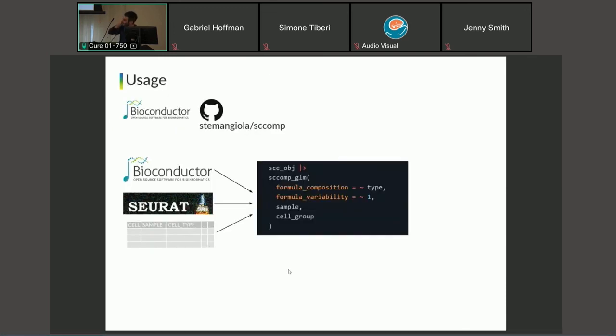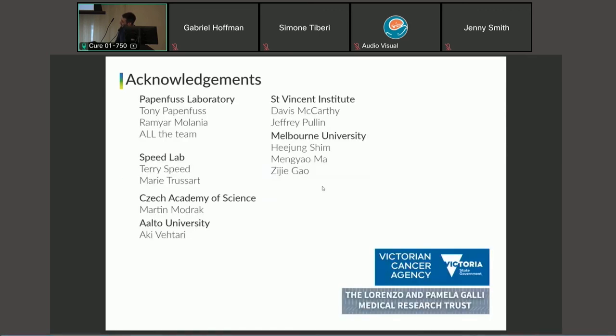That's it. This method is called SCComp, is available on GitHub and Bioconductor, accepts all sorts of data structures, and it's pretty easy to use in a linear model fashion when you declare your linear model for composition and variability. I have to thank Victorian Cancer Agency and my laboratory and many collaborators. I also invite you to tomorrow's workshop on Tidy Transcriptomics since we are here. Thanks a lot.